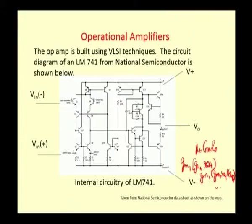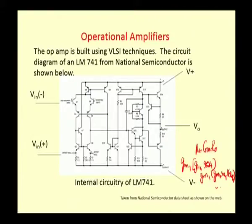In the second stage, Q15 serves as a level translator and Q17 is the next gain stage. The output of the first stage is given to Q15, which is an emitter follower — the output is taken at the emitter terminal and given to Q17, which operates in common emitter configuration. The output is then given to the output power stage.